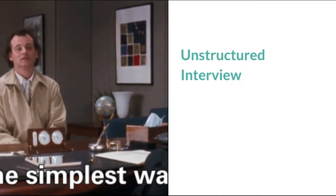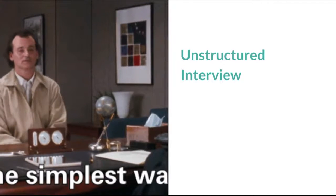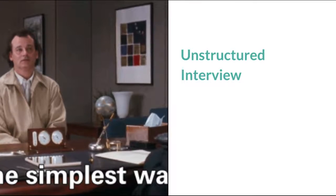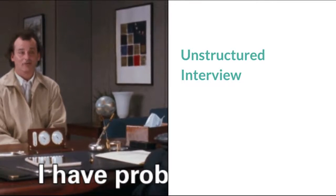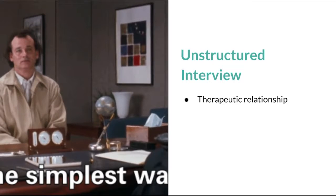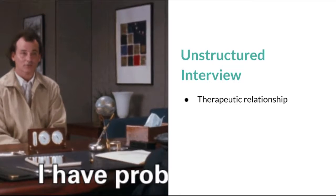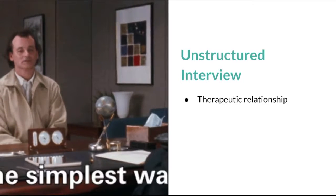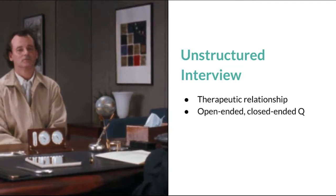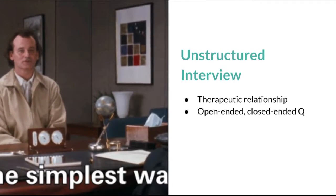In the classic movie What About Bob?, Bob Wiley's first therapy session is an initial interview with Dr. Leo Marvin. The interview is unstructured in order to help the clinician build a therapeutic relationship with the client and to determine what other assessments may be useful. The psychologist asks a combination of open-ended and closed-ended questions.